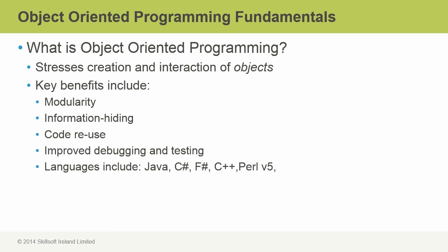Now, some of the languages that are included under the umbrella of object-oriented programming languages include Java, Microsoft C Sharp and F Sharp. We also have C++, and Perl version 5 is also an object-oriented language.